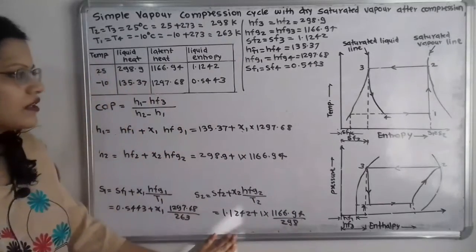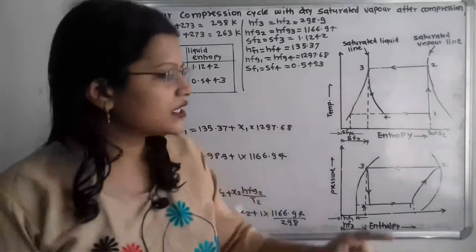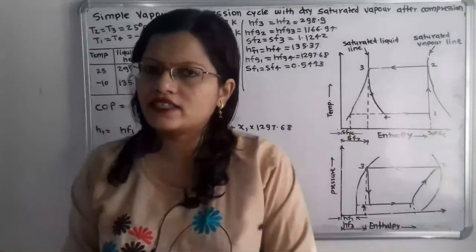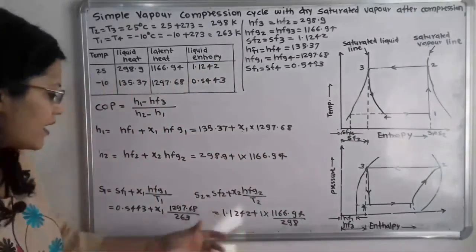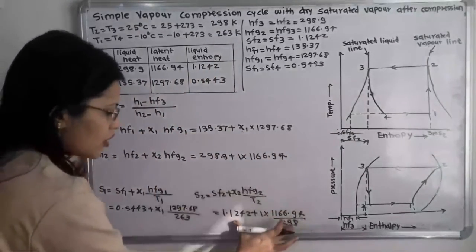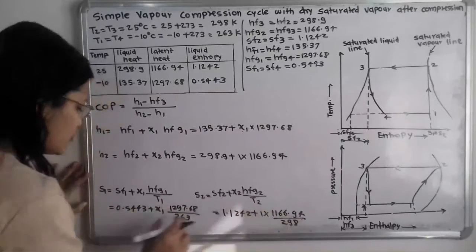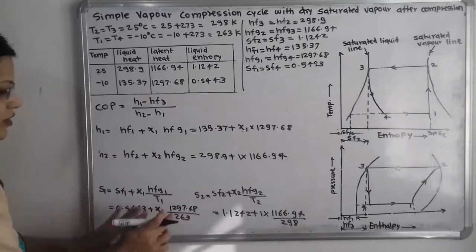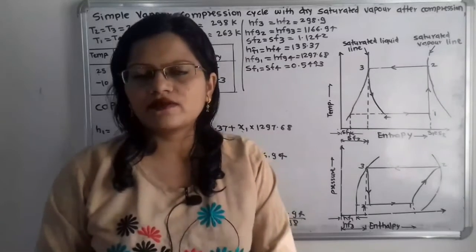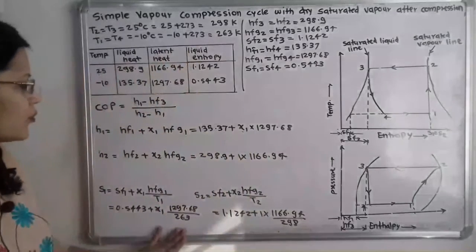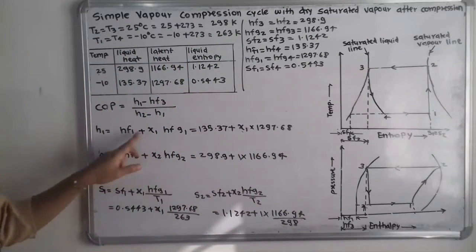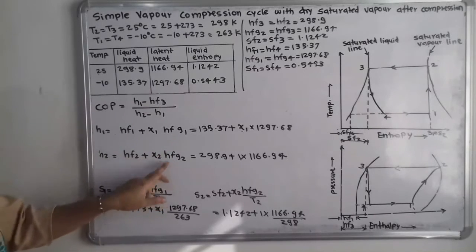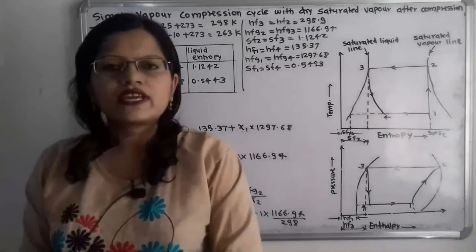Since process 1 to 2 is isentropic, S1 equals S2. With only x1 as the unknown, we equate the two entropy expressions and solve for x1, then substitute back into the H1 formula to find H1 and H2.